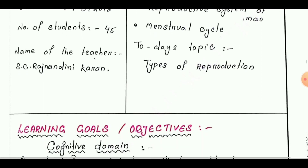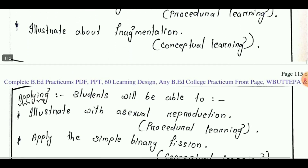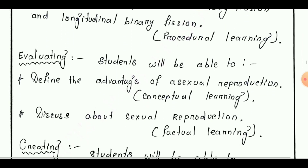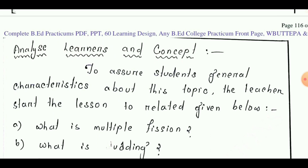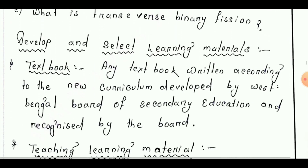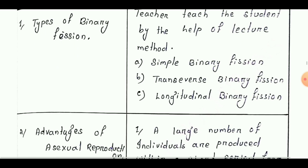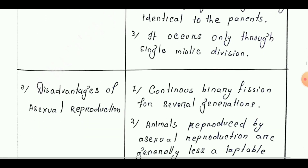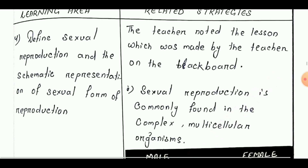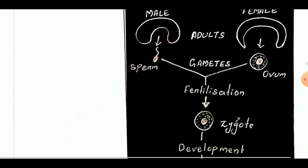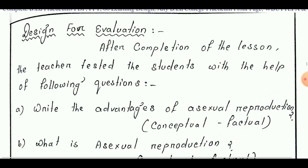Learning design number 19 is taken from Class 7. The lesson is 'Types of Reproduction.' Learning goals are: remembering, understanding, applying, analyzing, evaluating, and creating. Next is analyze learner and concept, then develop and select learning materials. Learning strategy covers advantages of asexual reproduction, definition of sexual reproduction, schematic representation, and significance of reproduction. Next point is design for evaluation.